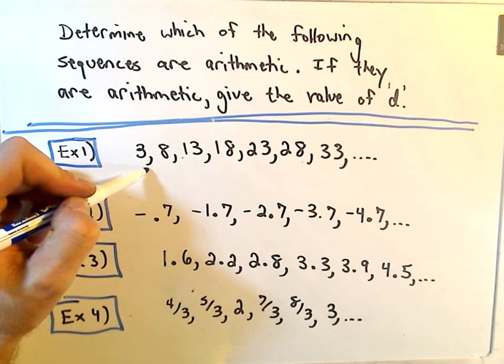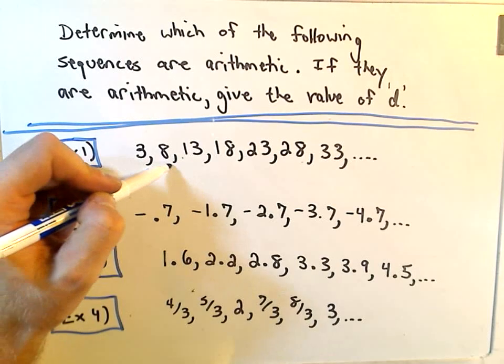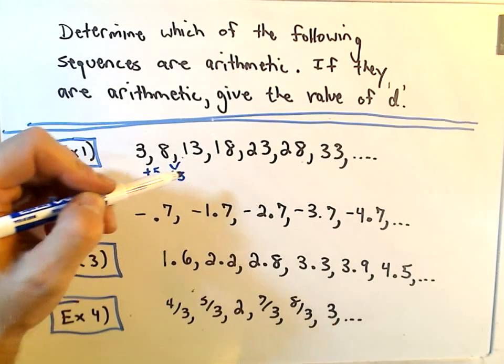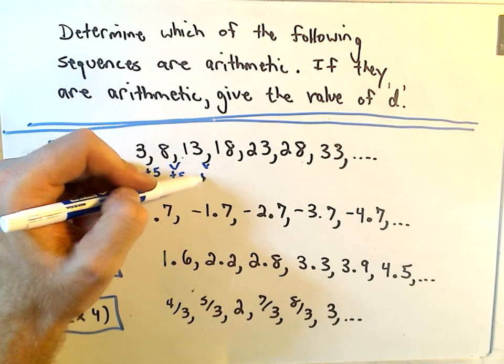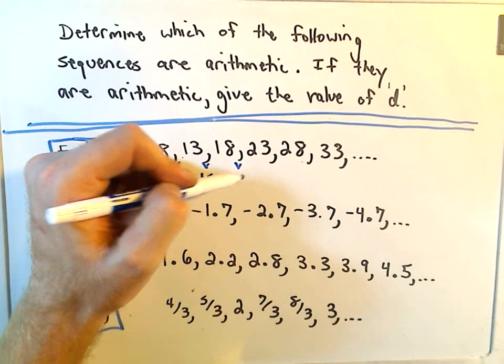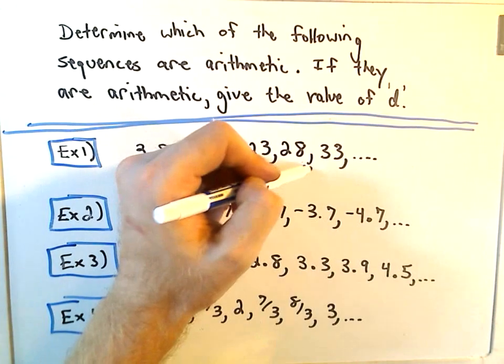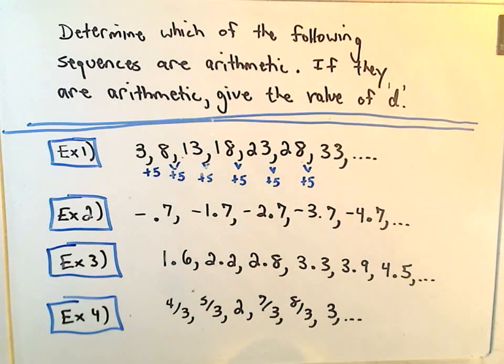Notice, okay, so to go from 3 to 8, we would have to add 5. To go from 8 to 13, we would have to add 5. To go from the number 13 to 18, hey, we add 5. And notice this pattern continues. We'll just keep adding 5, adding 5, adding 5.